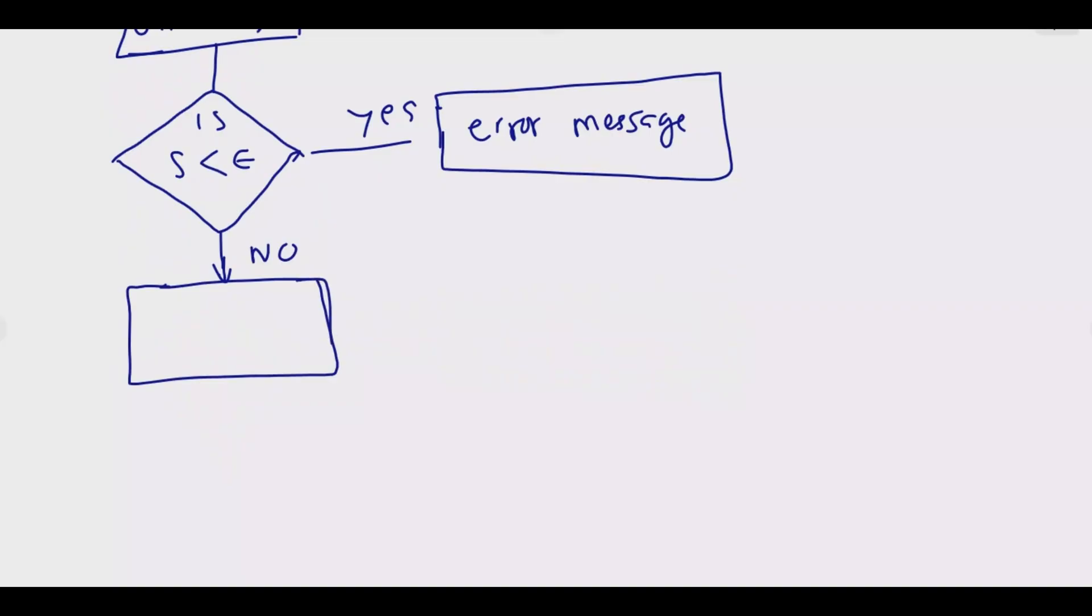So this is a rectangle. We say probability equals e over s, like that. Then after calculating, we need to print, which is the same as display, probability.